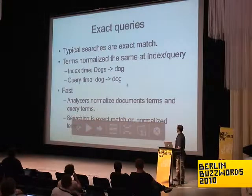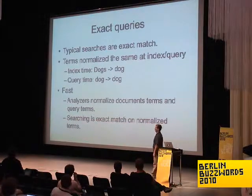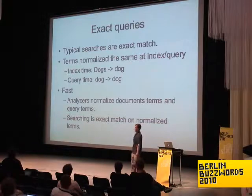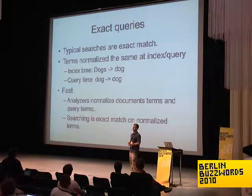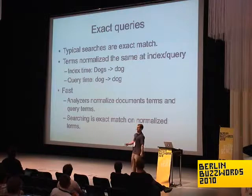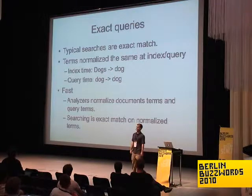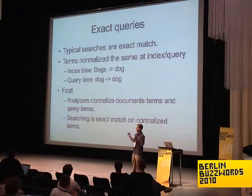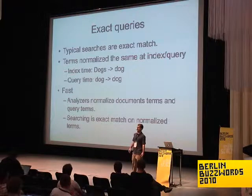Basically, this is how the search works. When you do a search with Lucene, it normalizes the text at index time and at query time — it's kind of like hashing. A stemmer will take "dogs," lowercase it, and make it "dog." At query time, you do the same thing. So this search is very fast — you're normalizing the text the same way so that you can do this fast exact match.